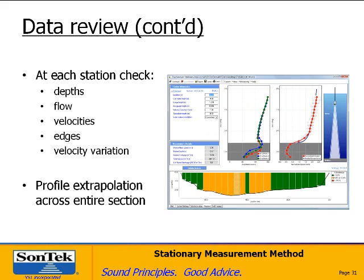When reviewing data, you can click on the stations tab at the bottom to look through each individual station. Click on a particular station in the graphic to highlight it. At each station, look at the depths — do they make sense? Check for an even distribution of flow across each panel. Look at the velocities themselves, check that edge distances are entered correctly, assess the velocity variation across the profile, and examine the profile extrapolation technique. In this case a 1.6 power curve is a good fit, but you may need to use other techniques such as the constant fit, or vary how you apply the extrapolation at the top and bottom.